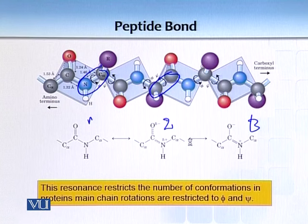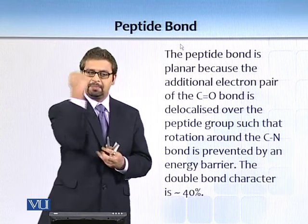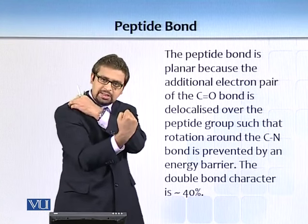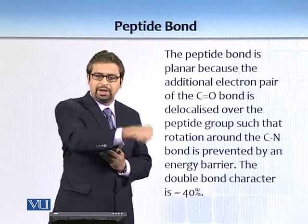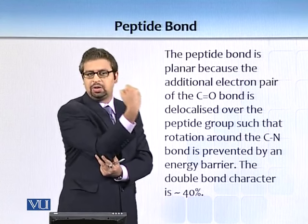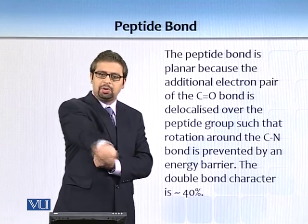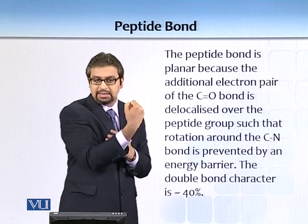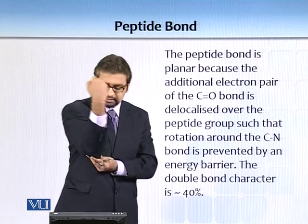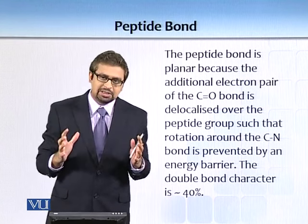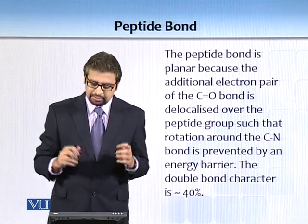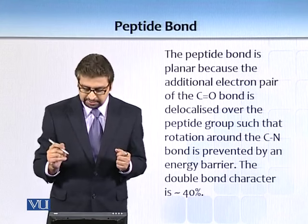The delocalization of electrons across the peptide bond — from one end to the other — prevents free movement, much like ligaments hold bones together in the body. Without that delocalization, free rotation would be possible. Because of this delocalization of electrons, the peptide backbone is restricted to a specific conformation, giving it a double bond character of around 40%.